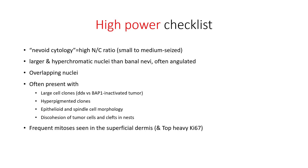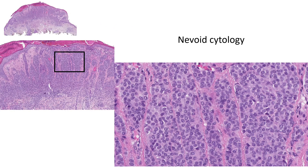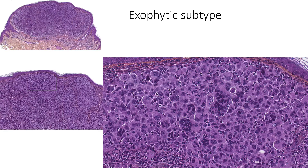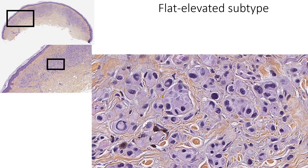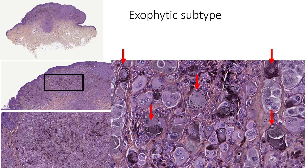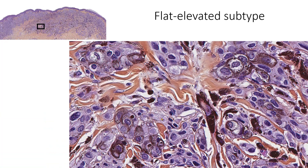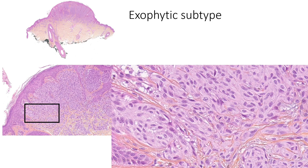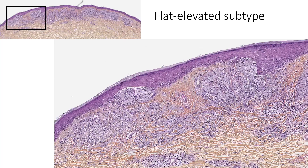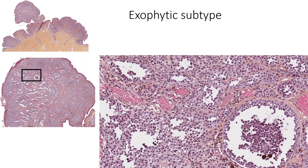Moving to the high power checklist, the first finding is the nevoid cytology — cells have round or oval small nuclei. In some instances you can have multinucleations or more important atypia. Some cases show plasmacytoid cytology, while other cases can be more spindle-shaped. In some cases there can be discohesion and pseudovascular cavitation.